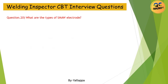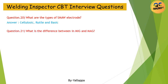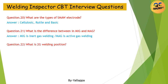Question 20: What are the types of SMAW electrodes? Answer: Cellulosic, Rutile, and Basic. Question 21: What is the difference between MIG and MAG? Answer: MIG is inert gas welding; MAG is active gas welding.